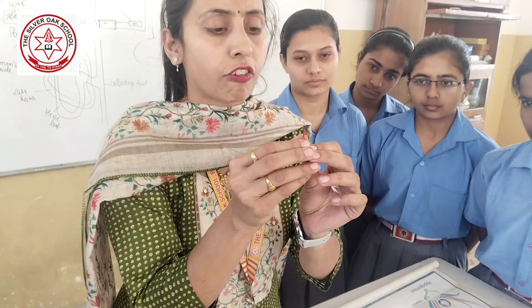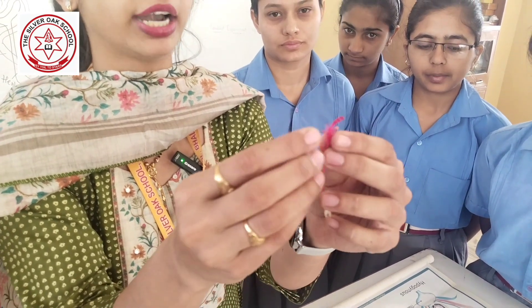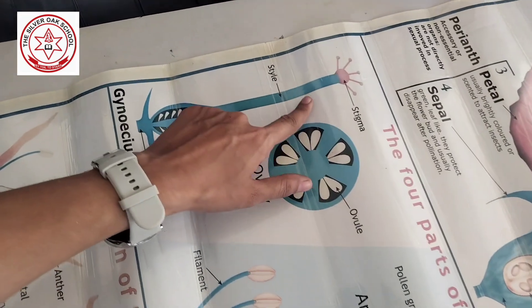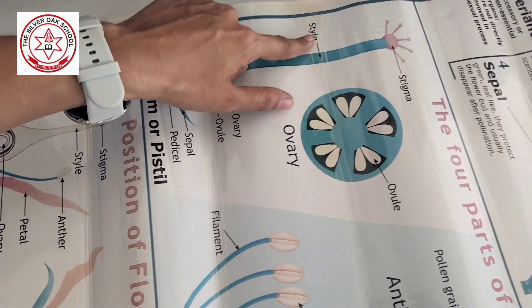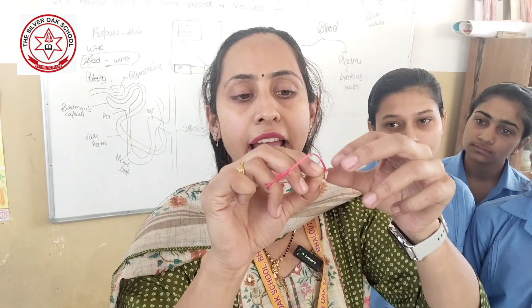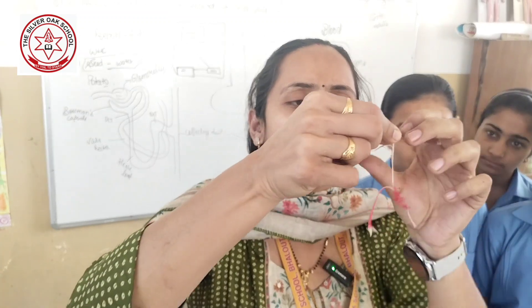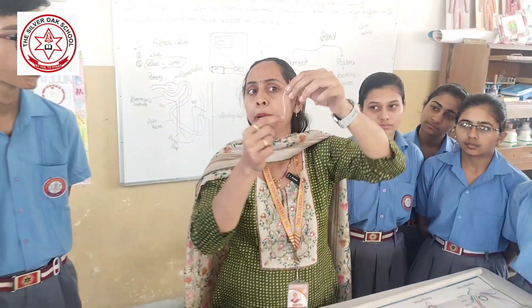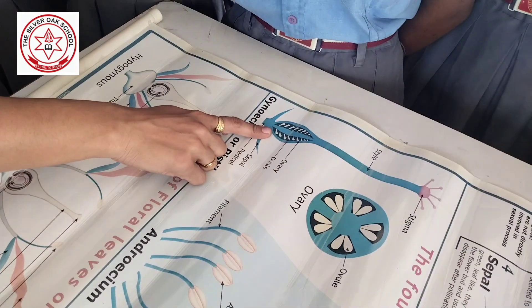Can you see this structure at the top? This is the part of the female reproductive system, known as the stigma. And this long tube through which the pollen grain will pass via the pollen tube — this is known as the style. The male gamete passes through the pollen tube to reach the female gamete and carry out the process of fertilization.